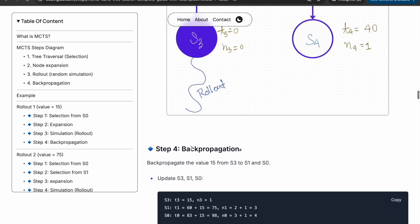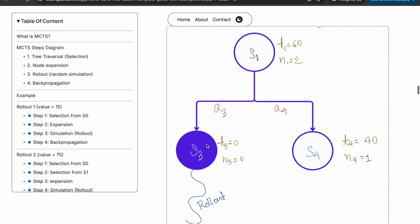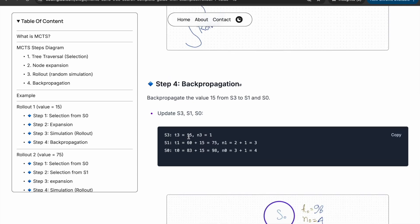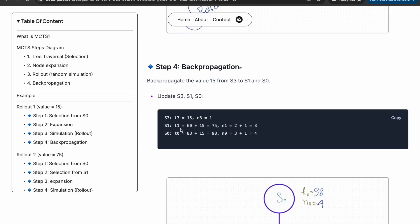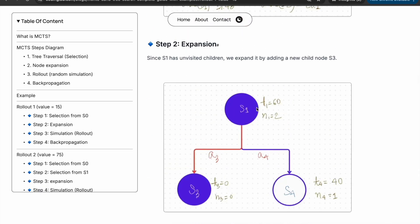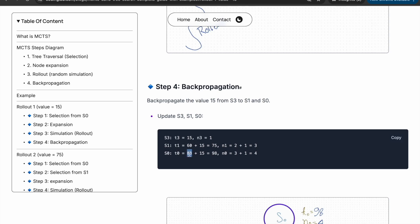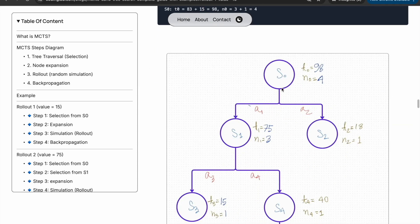Then the final step is backpropagation. The backpropagation step will update all the values from s3, then s1, then s0. S3 will become 15 and the number of visits will increase by 1; it was previously 0 for s3. S1 was 60 for t1 and n1 was 2, so s1 will increase by 15 to become 75, and n1 will increase by 1 to become 3. In the same way, for s0 it was 83, so it will become 98, and the number of visits will increase by 1 to become 4. That's the final value after rollout 1.